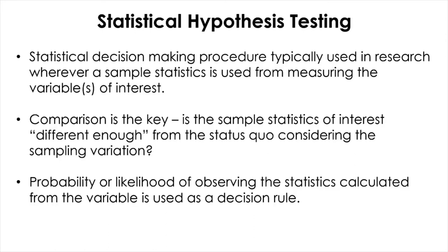Here, the status quo represents the Null Hypothesis — when nothing happens, when no change is assumed. Where is your statistic? What is the location of your statistic? How likely is it that you can observe this statistic at that location? That is the comparison you're going to make to reach a decision. The decision rule is basically the probability, or the likelihood, of observing the statistic at a certain location. That is the essence of statistical hypothesis testing.